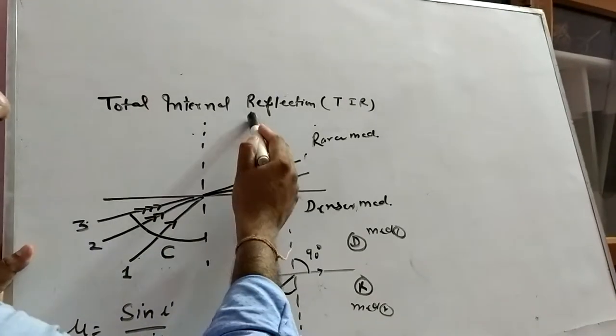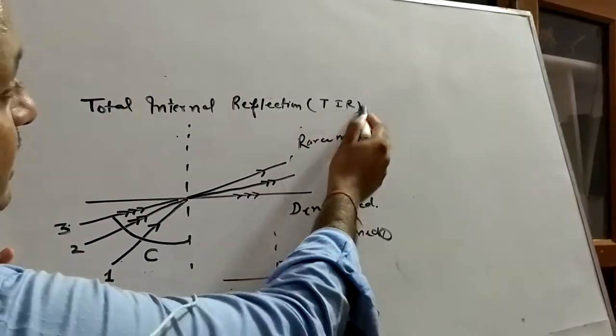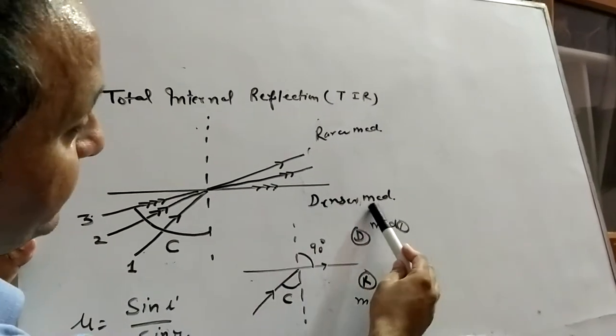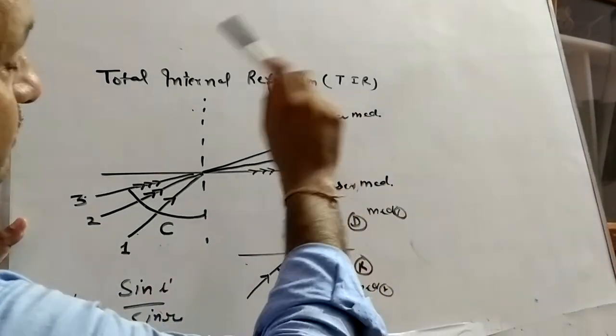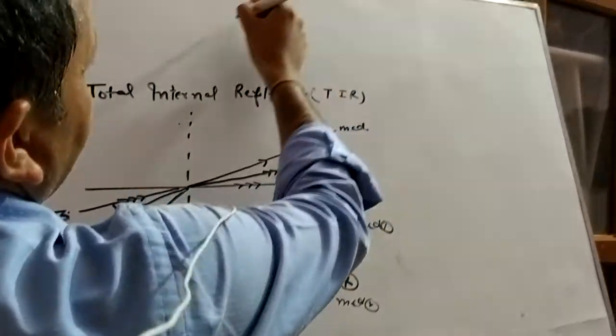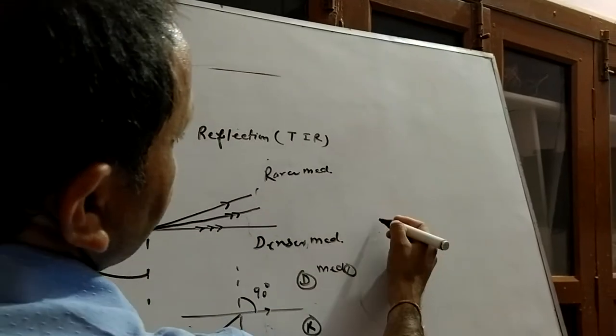Total Internal Reflection, TIR. You can say TIR. So, we know well when a ray moves from denser to rarer medium, it will bend away from normal. See here, it will bend away from normal.